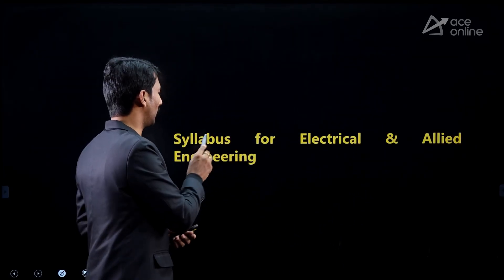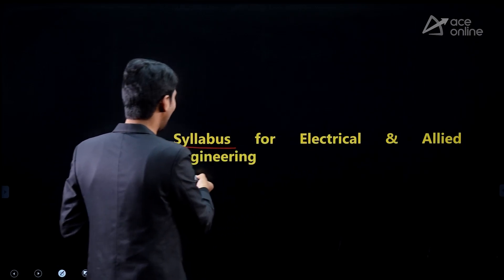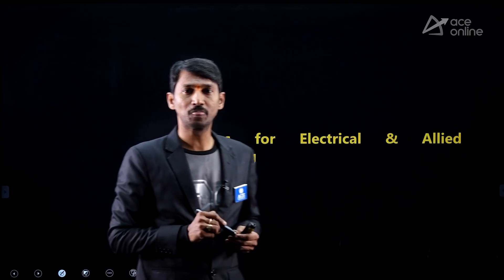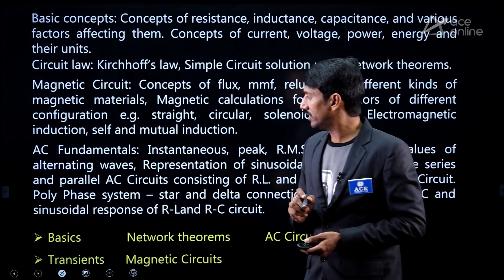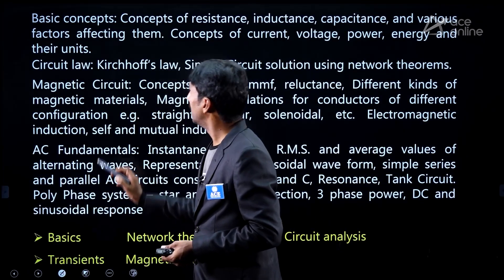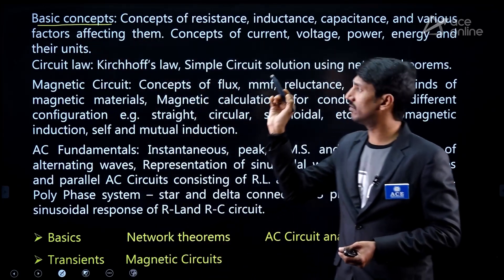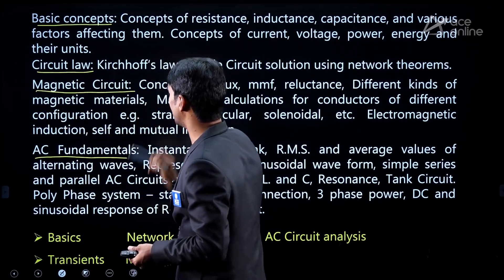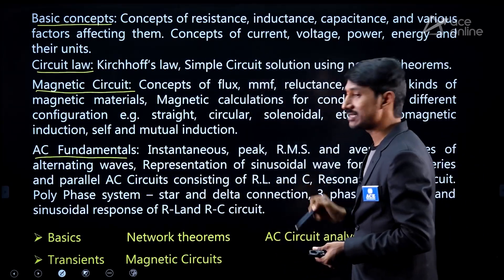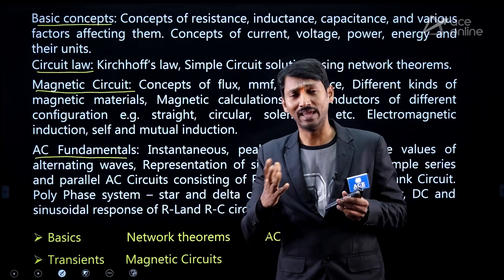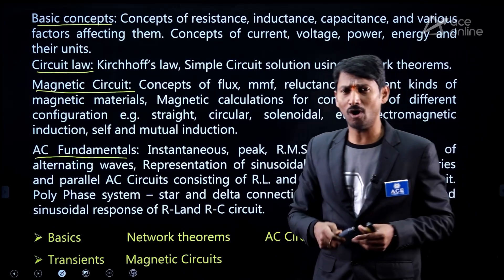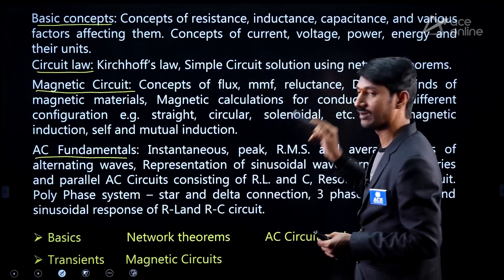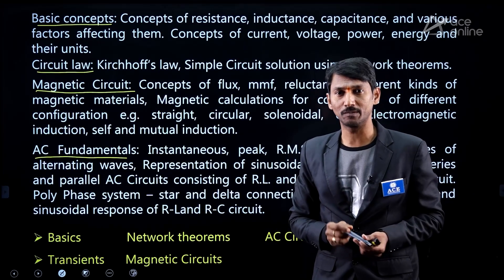Now I'll discuss the complete syllabus for electrical and allied engineering branches — what subjects are given, what topics are covered, and how to prepare. The syllabus starts with Basic Concepts, then Circuit Law, AC Fundamentals, and Magnetic Circuits. All these fall under the subject we call Circuit Theory, Electrical Circuits, or Network Theory.